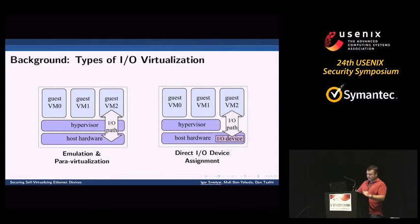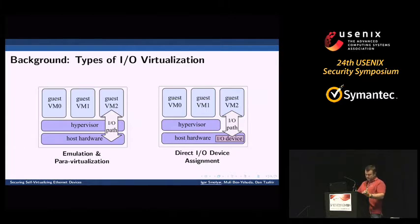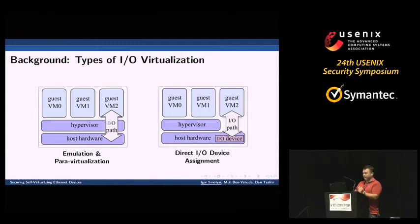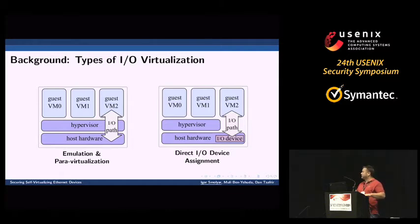We can virtualize IO in software. We have emulation, also known as trap-and-emulate, which we can use for virtualization. In both cases we let the hypervisor or host control each IO transaction. In the context of networking, the hypervisor will perform multiplexing, switching, and firewalling — and for that we pay a price in performance. To improve virtualization IO performance, we can remove the hypervisor from the IO path and let the virtual machine access the IO device directly without hypervisor involvement.